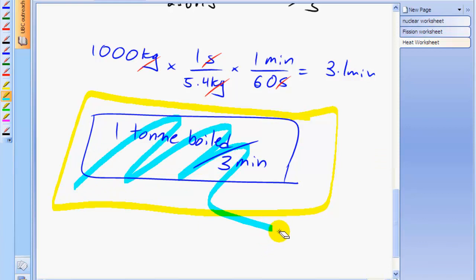And now that we've done this calculation, you have a better understanding of why using salt water is such a problem. Because if approximately one ton of water is boiled off every three minutes or so, and there's even more being boiled off right after the tidal wave hit,